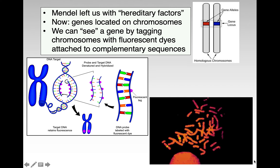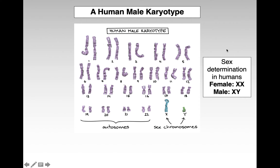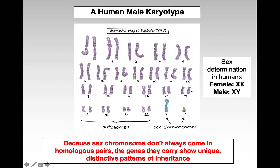We can actually visually tag genes by complementary base pairing and putting on a fluorescent tag. We already talked about karyotypes, and we have 22 autosomes and two sex chromosomes. Sex determination in humans is determined by females having two X's and males having an X and a Y.